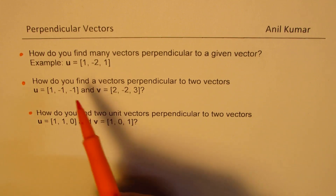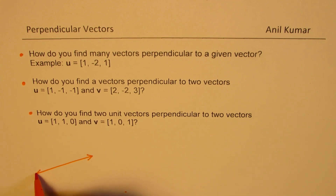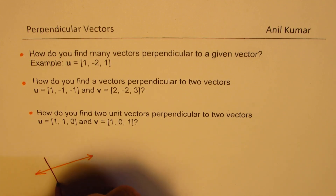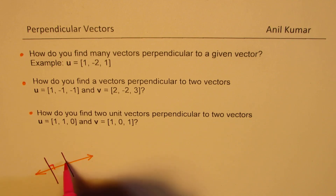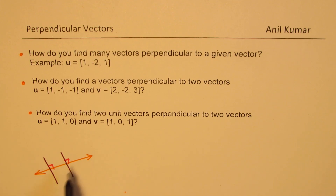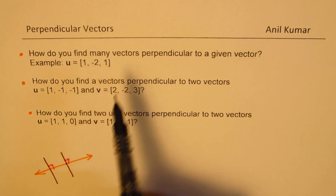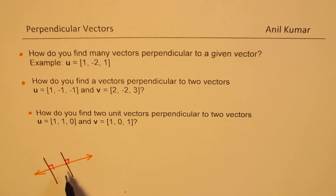It is very clear that if you have a vector on the plane of the paper, we have many perpendicular vectors. I could draw vectors anywhere like this, and all of these are perpendicular to the given vector. More than that, if I have a vector going through the paper, all those vectors are also perpendicular. So we definitely have infinite vectors here. But the question arises, how do we find them?